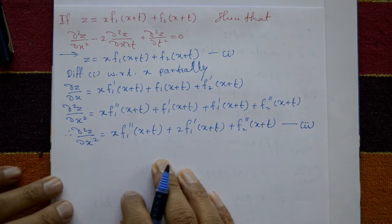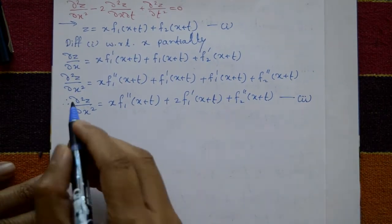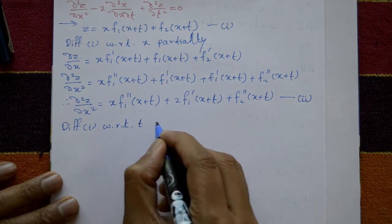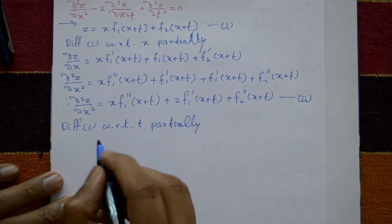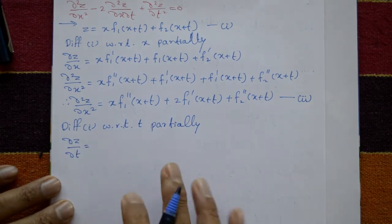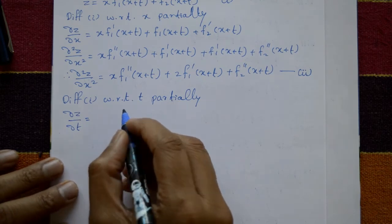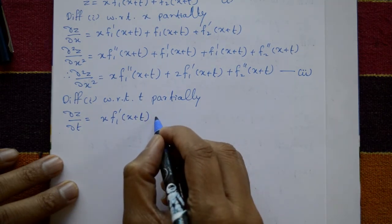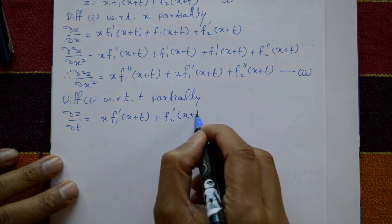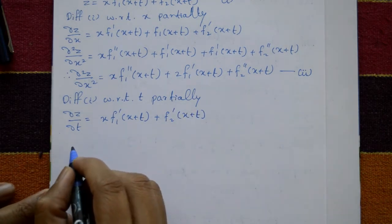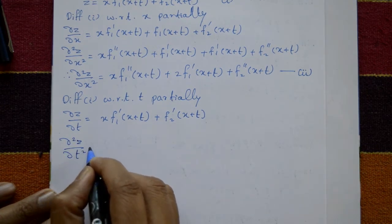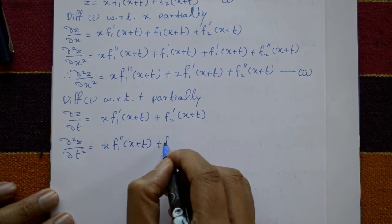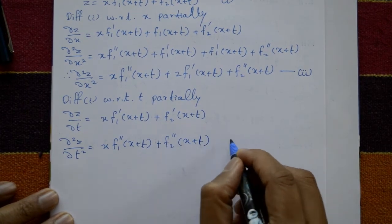Next, differentiate equation number one twice with respect to t, treating x as a constant. After differentiating, ∂²z/∂t² equals x·f1''(x+t) plus f2''(x+t). This is equation number three.